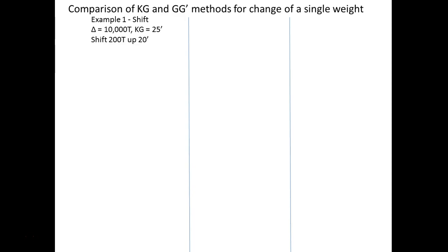We're going to do three examples. In these three examples we'll first do them all by the theory of moments, then do them all by the shift of G — proving you can do it either way. Example one: we're going to shift a weight. If we're shifting a weight, we're not loading or discharging — just moving it from one place on the vessel to another. When we do that, the displacement of the ship does not change. Our displacement for this example is 10,000 tons, KG is 25 feet, and we're going to shift 200 tons up 20 feet.